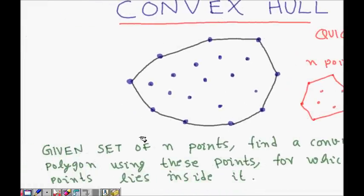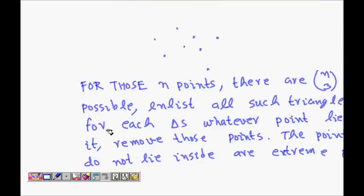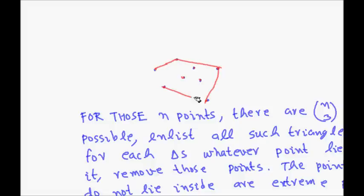Now we will go to a brute force algorithm to solve this problem. If there are n points, we can have n choose 3 pairs of triangles — that is O(n³) triangles. Let's say 8 points are there and I want to find the convex hull. If you see one property: basically if I try, the convex hull would be these points forming a polygon.